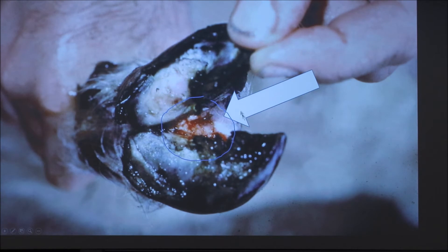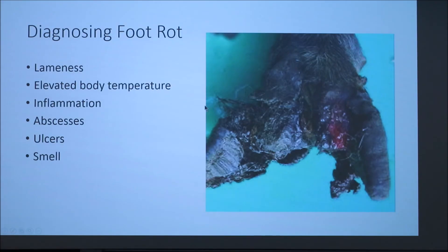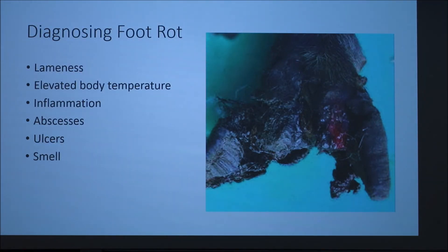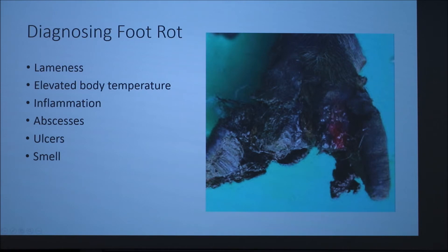Here's an actual picture on a sheep. We can see the pus creating its environment between the two horns of the hoof. As for diagnosis, you're commonly going to see lameness in the animals, an elevated body temperature because it's fighting an infection, inflammation, and abscesses and ulcers along the feet.